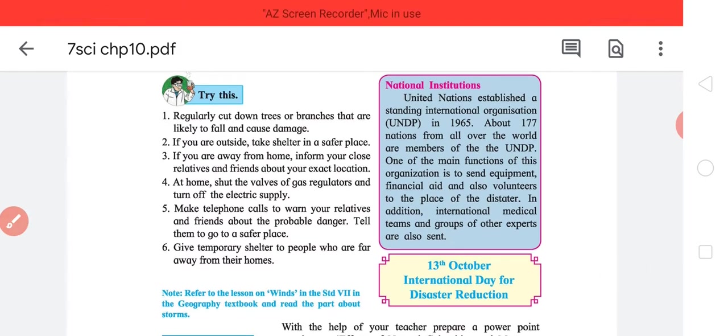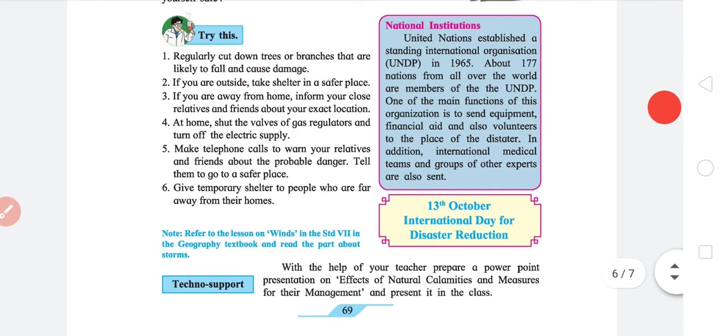If you are away from home, inform your close friends and relatives about your exact location. What happens after the storm is that mobile towers are often disrupted, so it's better to call them before the damage starts to happen. Fourth, at home, shut the valves of gas regulator and turn off the electricity supply.